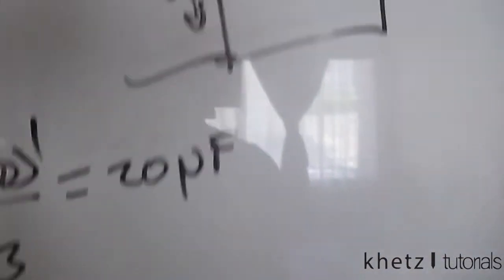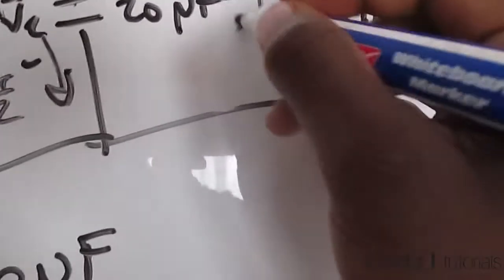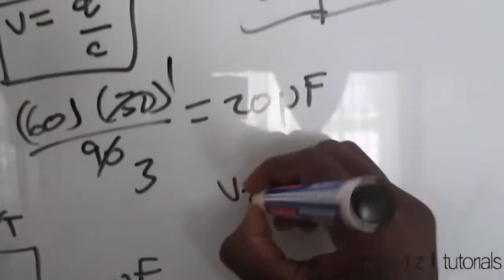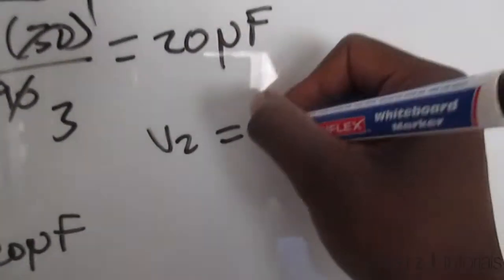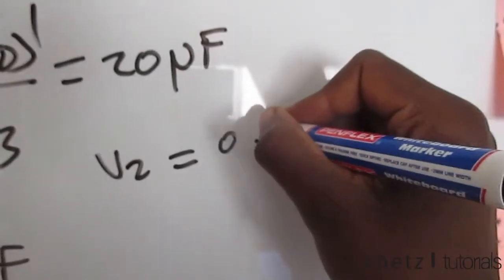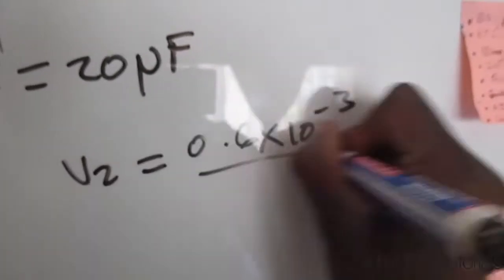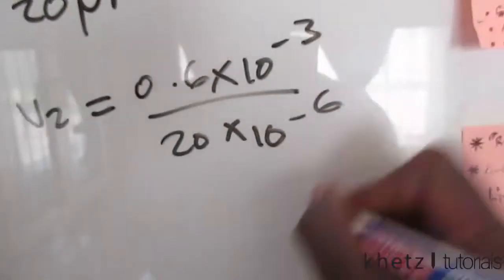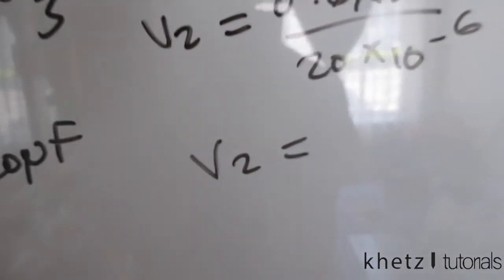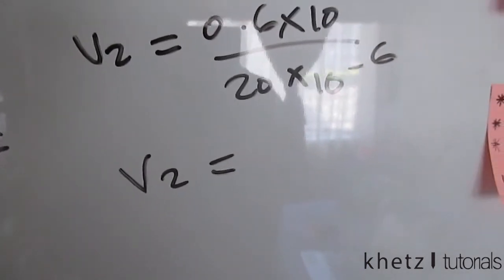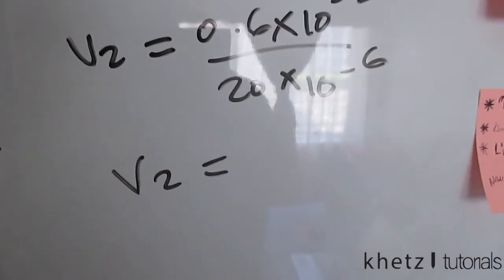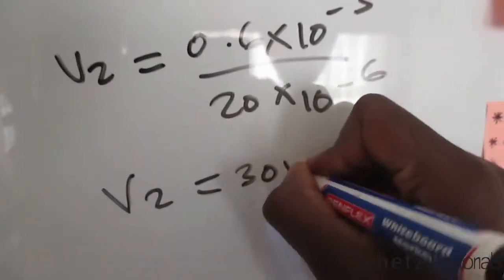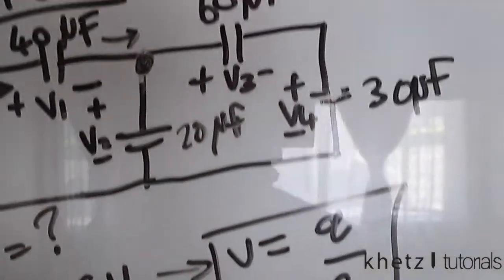So half of Qt goes to each branch. For V2: V equals Q divided by C, which is 0.6 times 10 to the minus 3 divided by 20 microfarads. The answer is 30 volts. So V2 equals 30 volts.